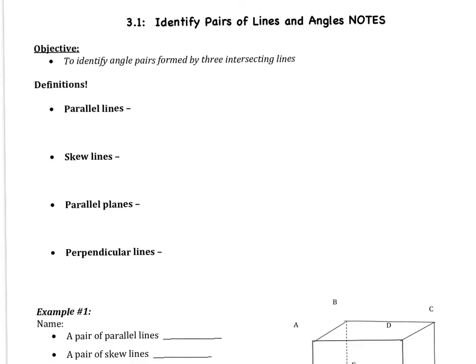Welcome to the first video of chapter 3. Chapter 3 is all about lines. We're going to be talking about parallel and perpendicular lines, the angles that are formed when we have parallel lines, and we're going to be writing the equations of lines. We're going to start today with section 1, which is identifying pairs of lines and angles. We have one objective: we are going to identify angle pairs formed by three intersecting lines.